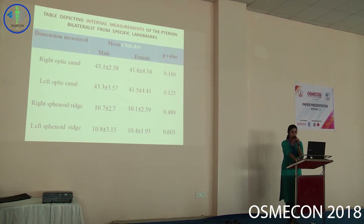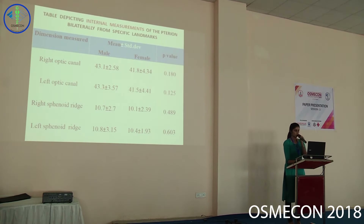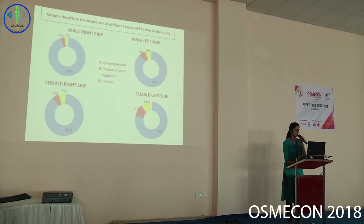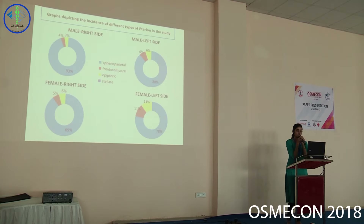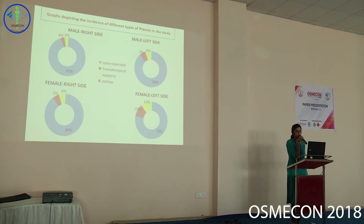The internal measurements of the Pterion bilaterally from the optic canal and the sphenoid ridge in both males and females on right and left sides respectively do not show any statistically significant sexual dimorphism, as none have a p-value less than 0.05. The graph depicting incidence of different Pterion types shows consistent similarity across groups: sphenoparietal is the most common, followed by frontotemporal, epiteric, and stellate types.